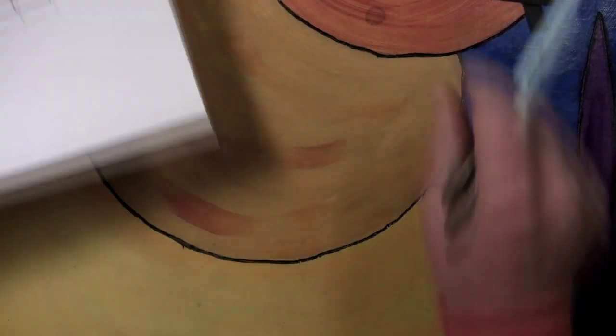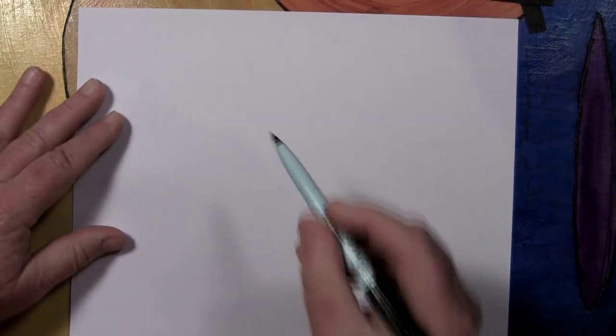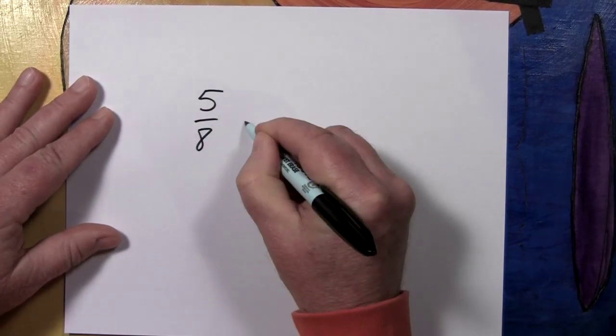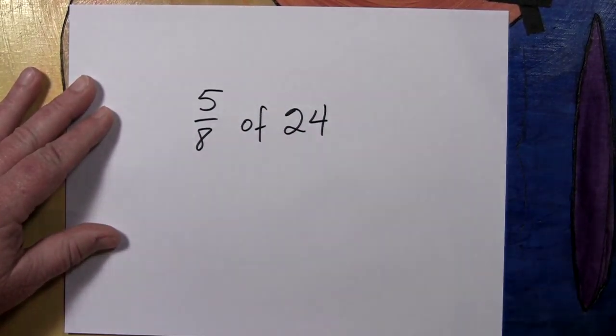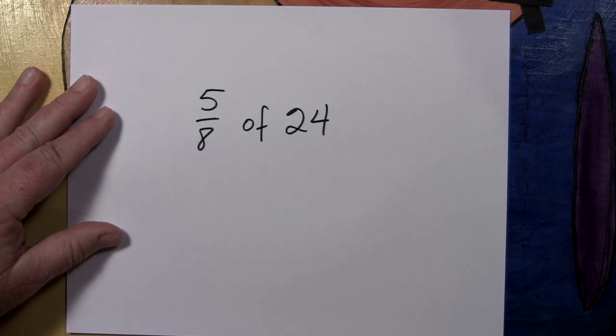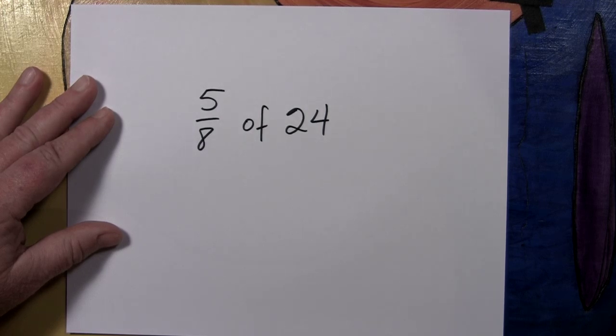But as soon as I ask you, please find for me five eighths of twenty-four, many people choke up, not quite sure what to do with that. Well actually, if we keep the cake and the candy bar in mind, this is no big problem.